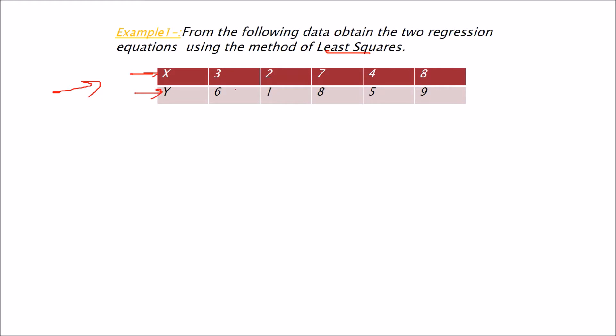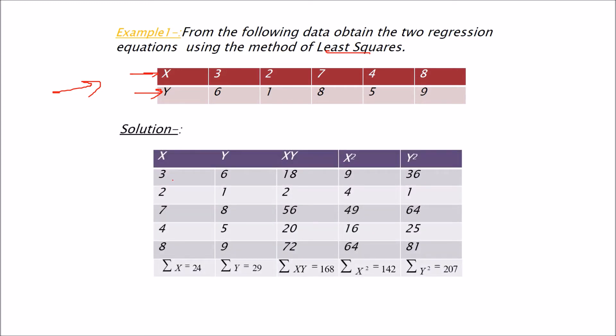X are these values, Y are these values. We are going to use these values for the next two coming methods also. So let us start. X is 3, 2, 7, 4, 8. Y is 6, 1, 8, 5, 9.